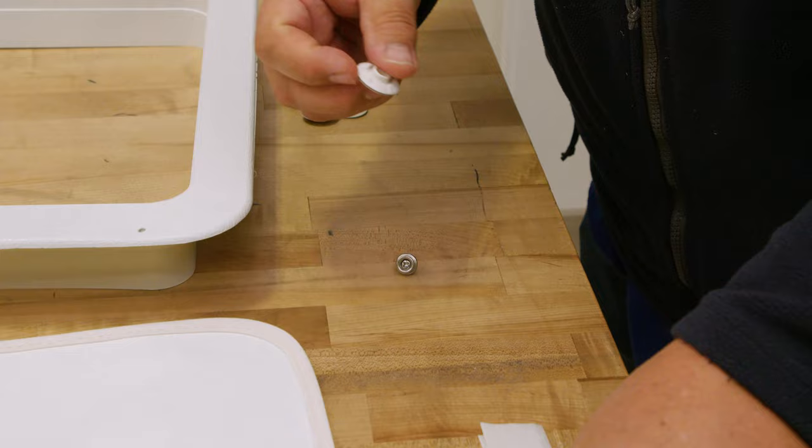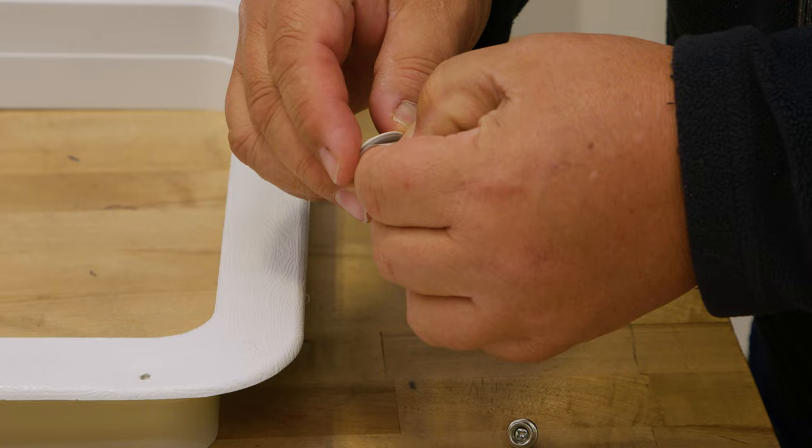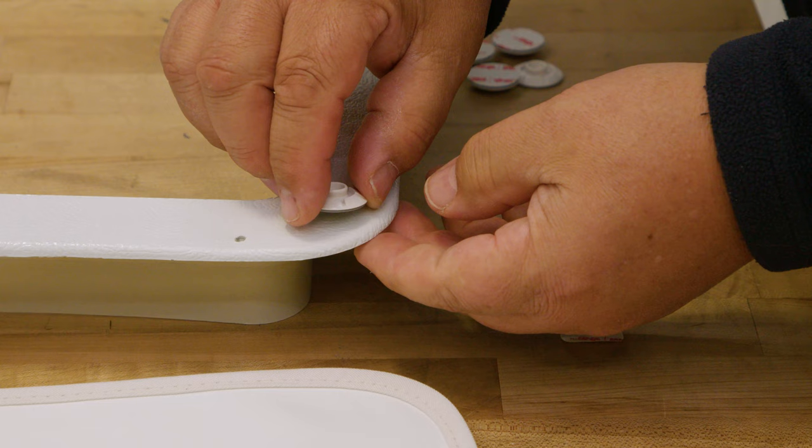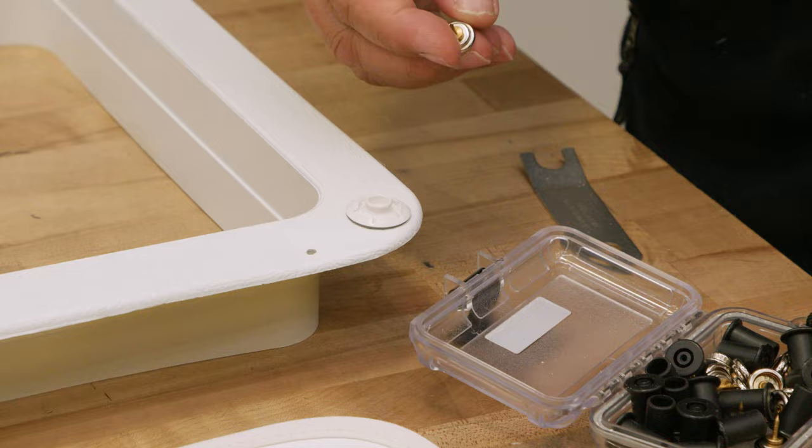You don't even really have to let that dry for very long. Then we're going to peel off the transfer paper on the bottom of the 3M VHB of the snad. And we're going to secure it to the corner and press for about a minute or so.